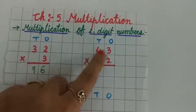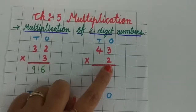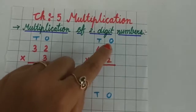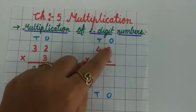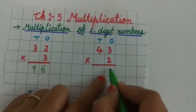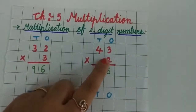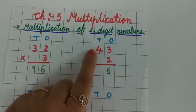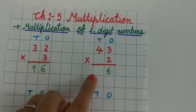43 multiply by 2. So first you have to multiply the 1's place digit. 2 threes are 6. So write 6 below the 1's place column. Now, 2 fours are 8. So write 8 below the 10's column.